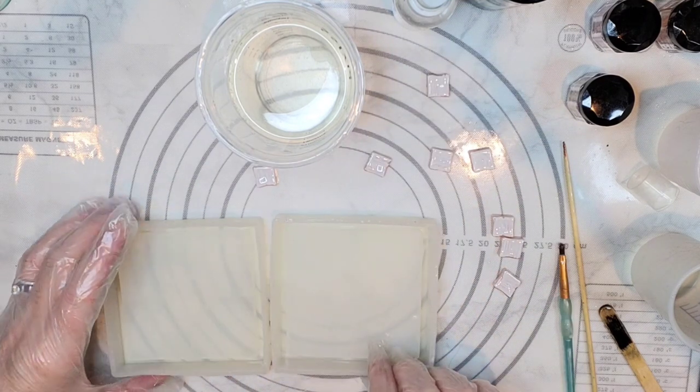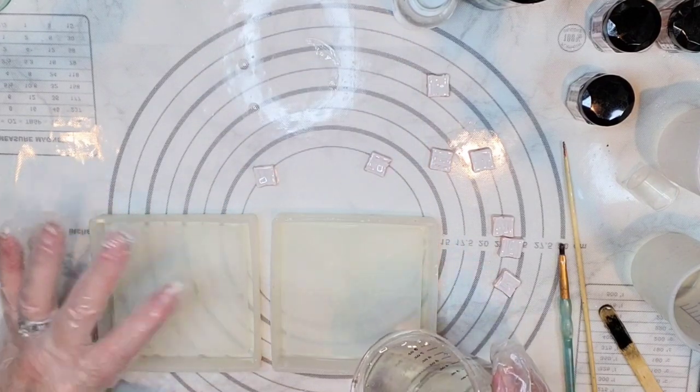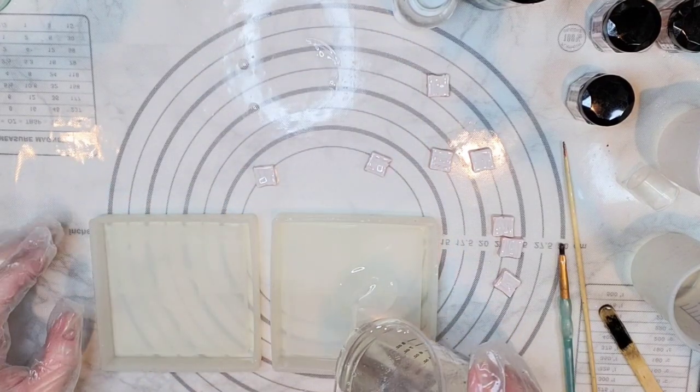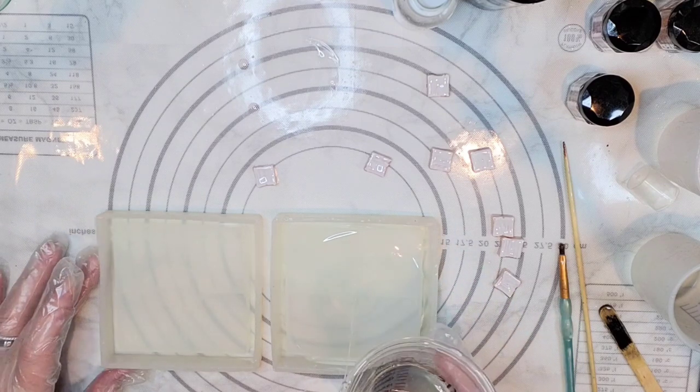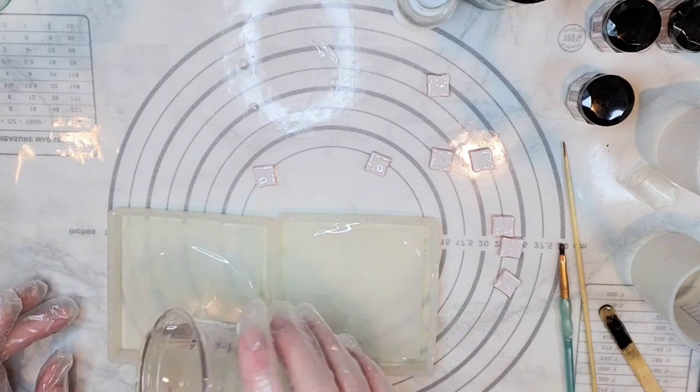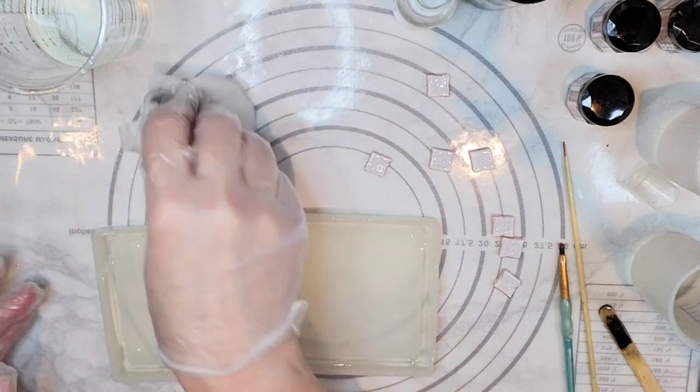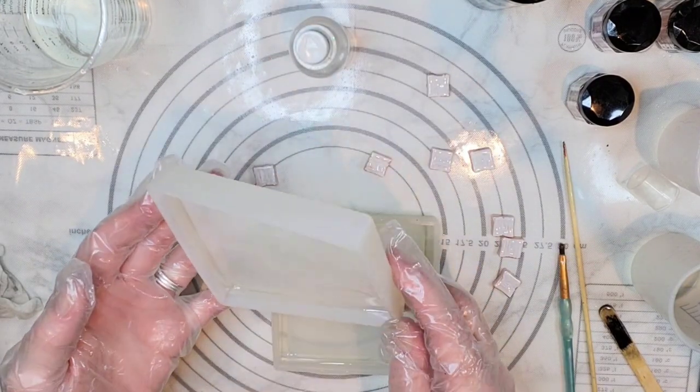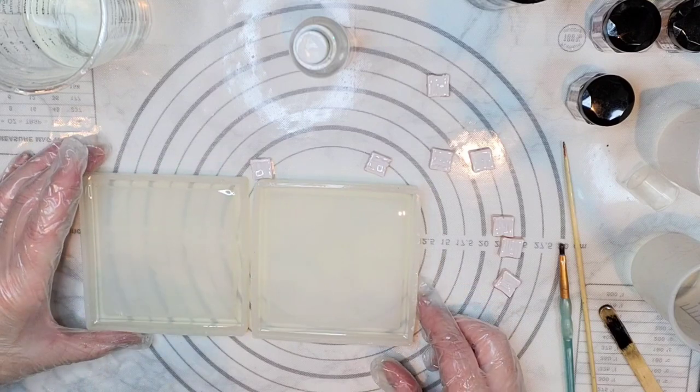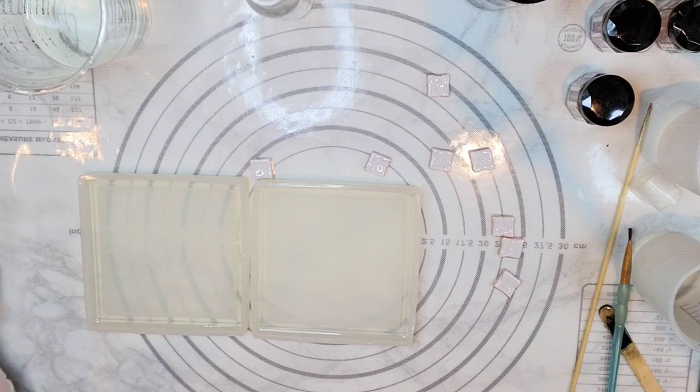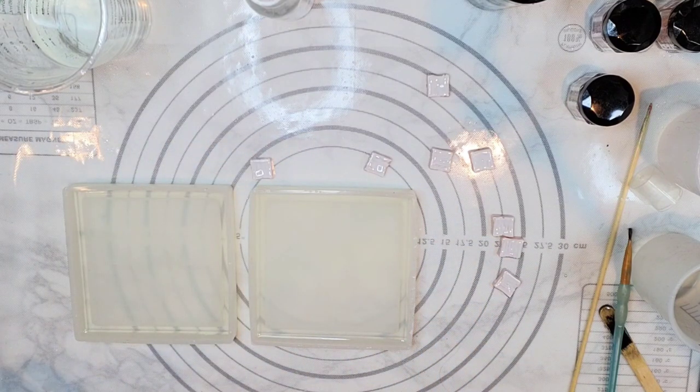So what I'm going to do is I'm going to pour a base coat into both of these four-inch square rimmed coasters. And I'm looking for bubbles. I don't really see any. So now what we're going to do with this, this is going to be a really fun project.